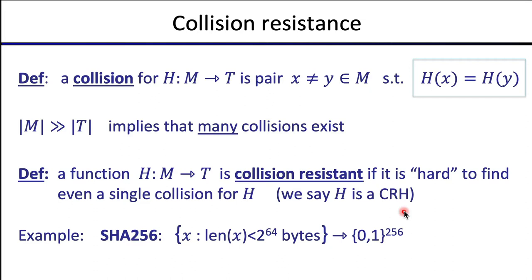You might be wondering what's an example of a collision resistant hash function. The canonical example is SHA256 — a fixed hash function specified in a federal standard. It takes an arbitrary amount of data, up to 2^64 bytes, so potentially megabytes or even petabytes of data, and always maps them to a 256-bit output, which is 32 bytes. The function is collision resistant, meaning it's difficult to find two distinct messages that map to the same 32-byte digest.